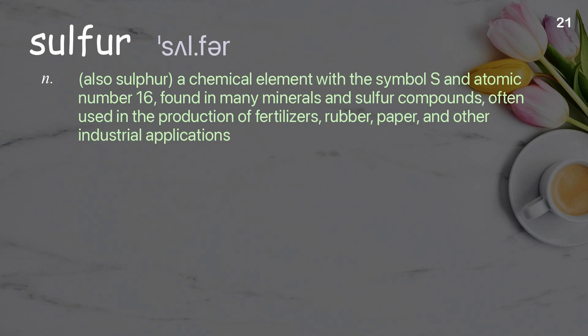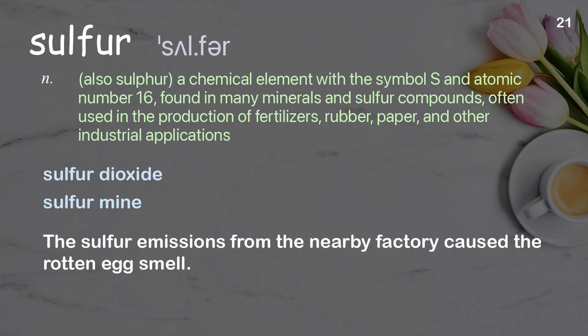Sulfur. Also sulphur, a chemical element with the symbol S and atomic number 16, found in many minerals and sulfur compounds, often used in the production of fertilizers, rubber, paper, and other industrial applications. The sulfur emissions from the nearby factory caused the rotten egg smell.